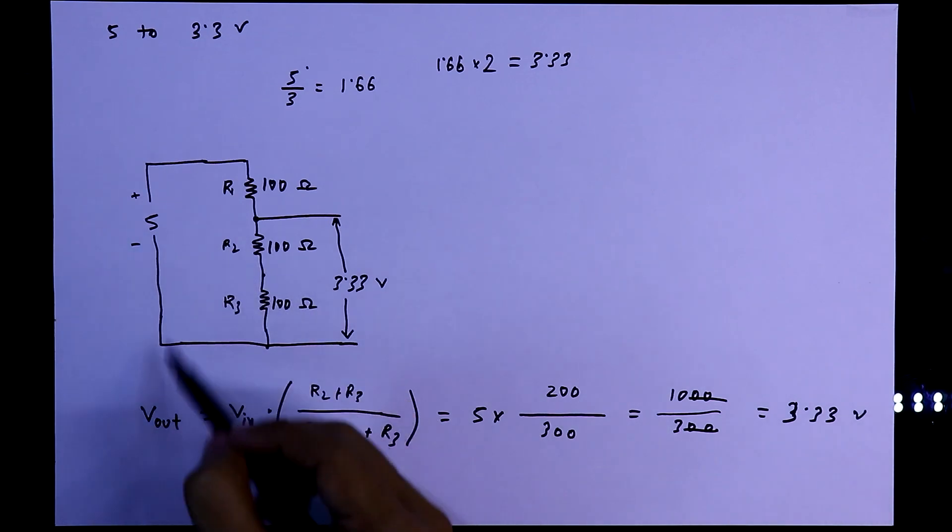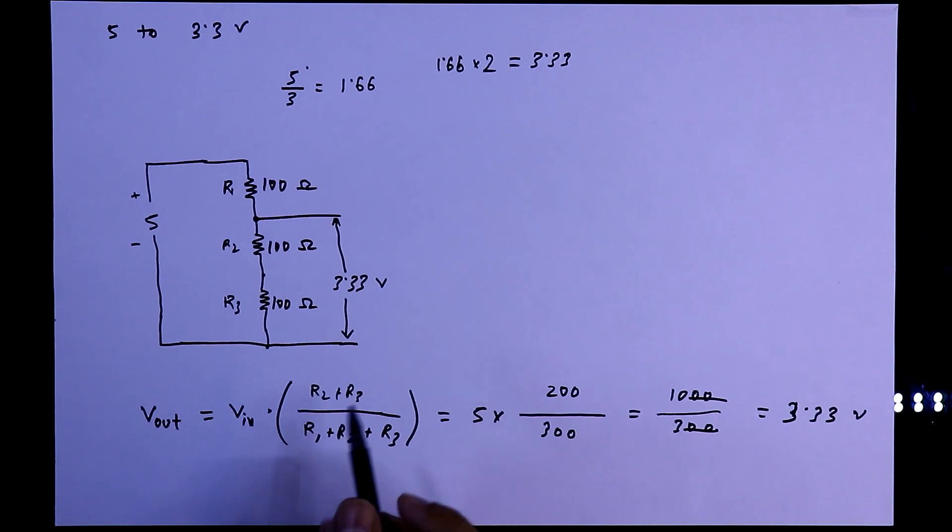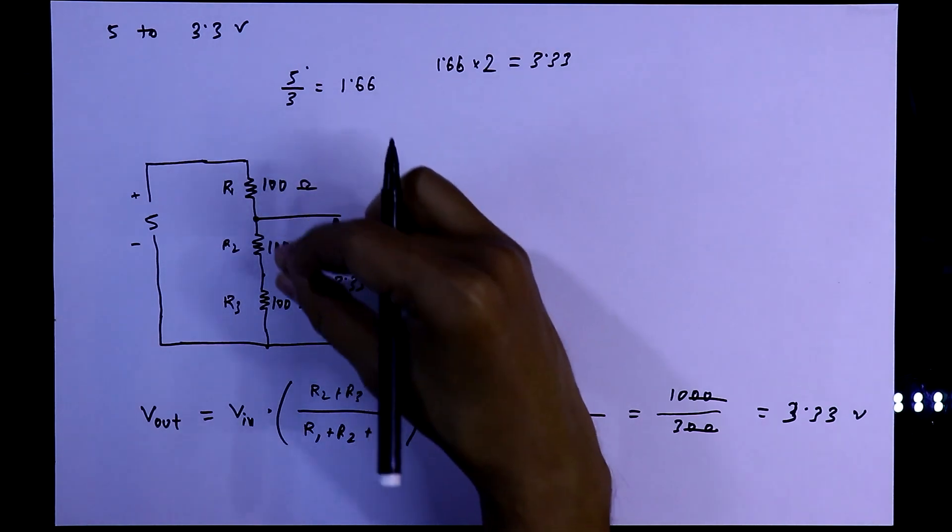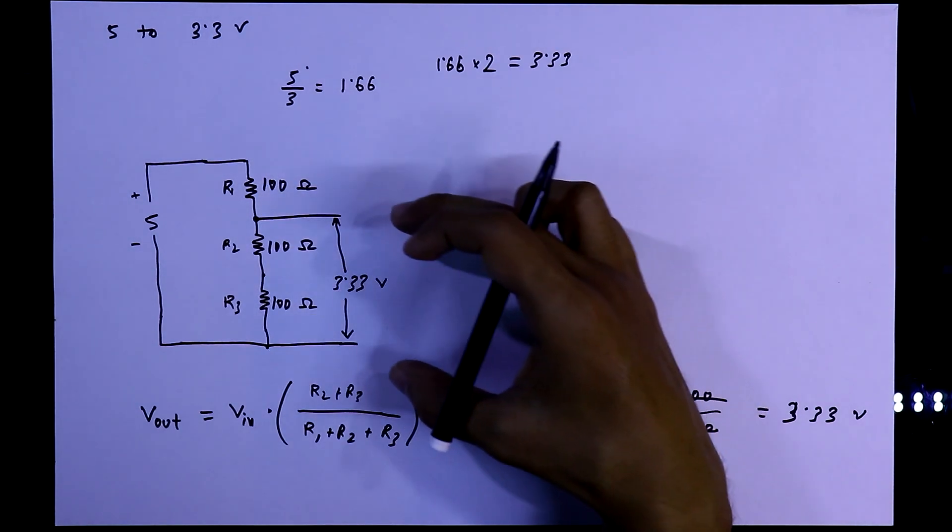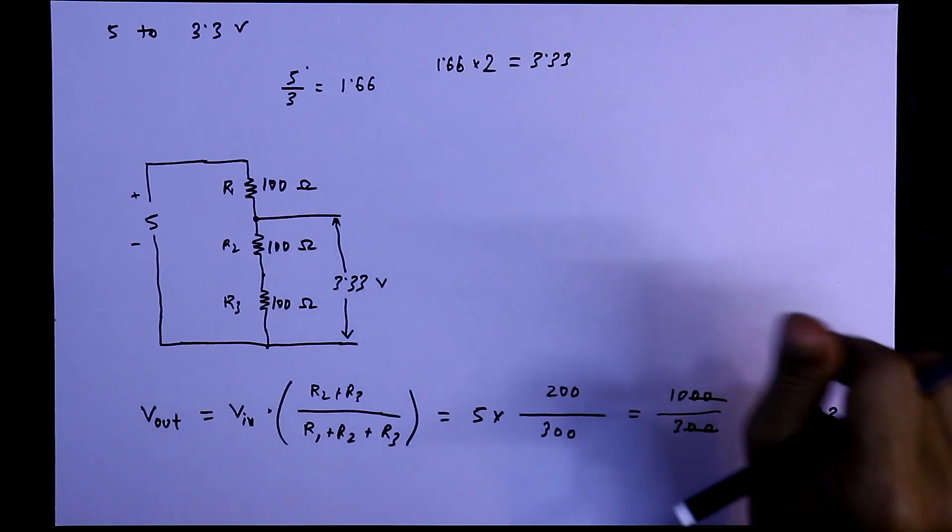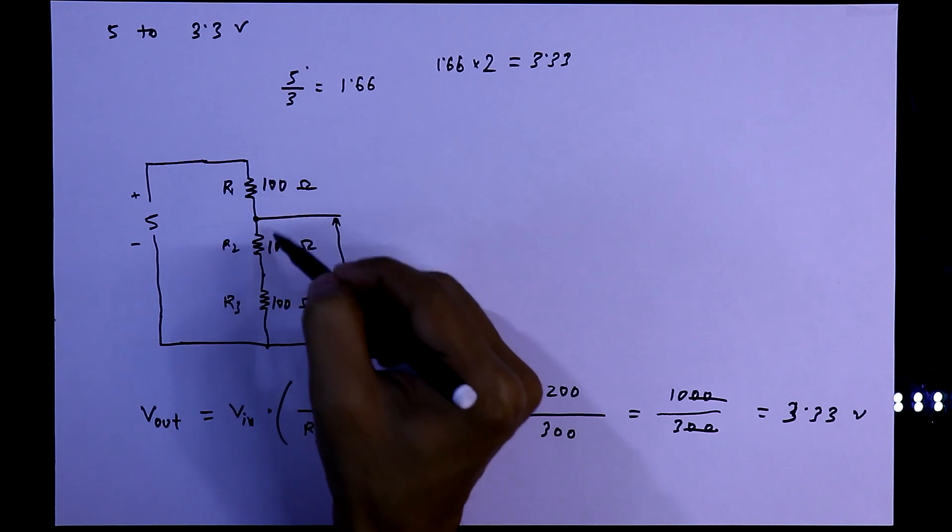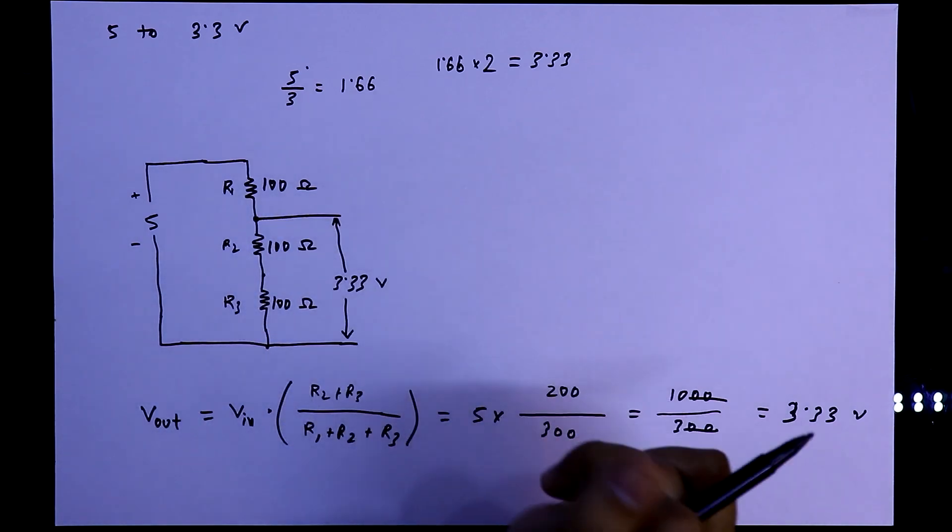Now whatever the input voltage, first I divide in equal parts. And then I see how to manage the output voltage. You can take any other resistor value, but you have to keep it equal. Then only this will work. And then combine all this.